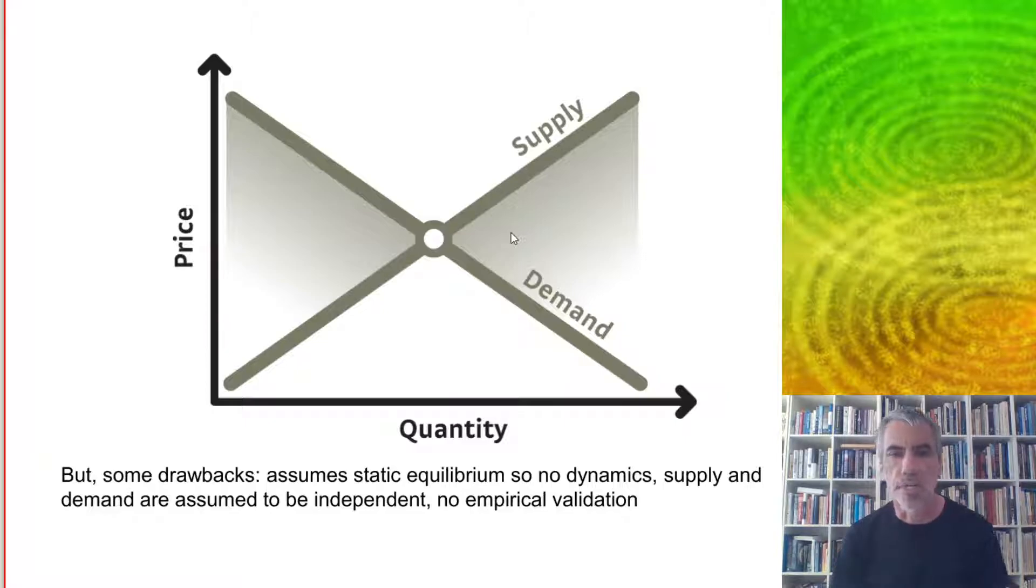But as critics have long pointed out, there are a number of drawbacks. It assumes static equilibrium, so there are no dynamics. Supply and demand are assumed to be independent, and there's no empirical validation because something like a demand curve can't even be measured because it requires hypothetical price points.